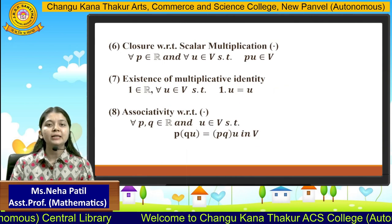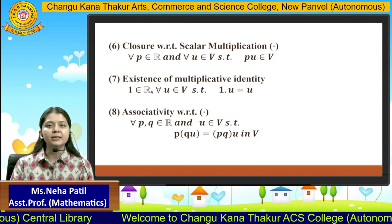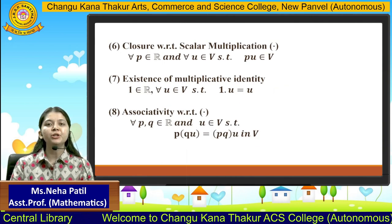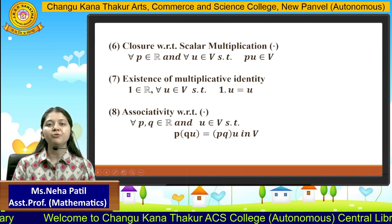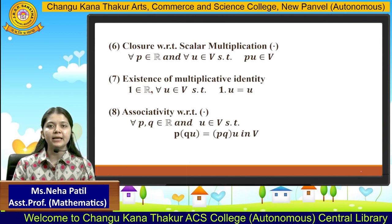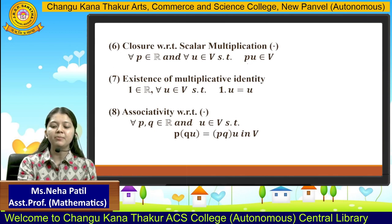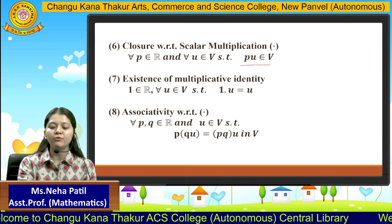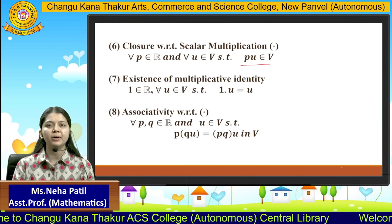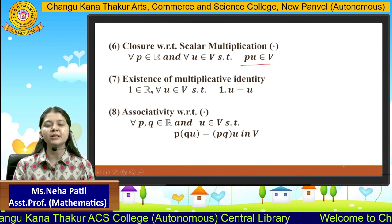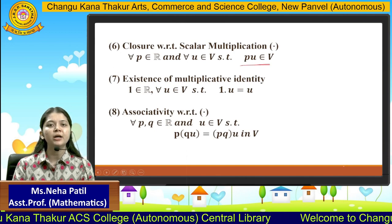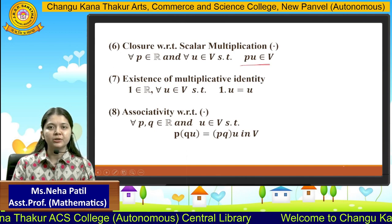The sixth property is closure with respect to scalar multiplication. This says that if we take any scalar and multiply it with an element of the set, the result will always belong to that particular set — just like closure under addition.